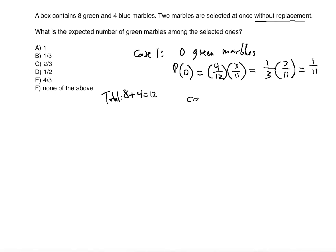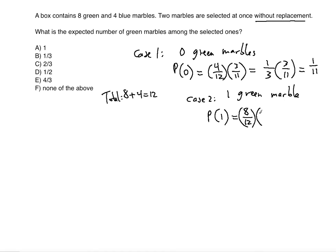Now case 2: one green marble among the two selected. What is the probability of that happening? The probability that the first marble is green is 8 over 12. And the probability that the second marble is not green — because we're only dealing with one green marble — so the second must be blue, meaning 4 over 11.